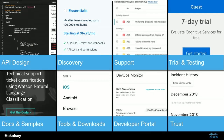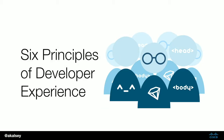What goes into developer experience? There are many things: API design, discovery, pricing, support, trial and testing mechanisms, documentation, tools, downloads, the developer portal, and trust. When you start thinking about creating a good developer experience, you don't just think about what the website looks like — you think about all of these things, just like you would with any product.